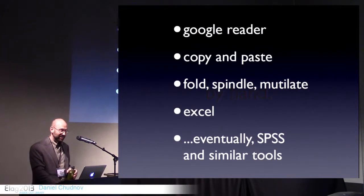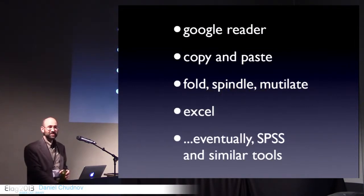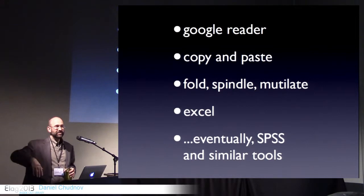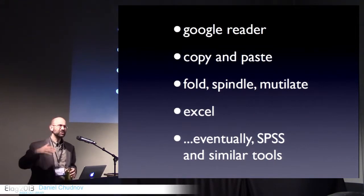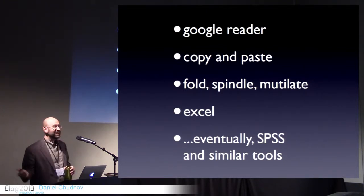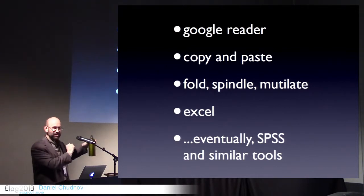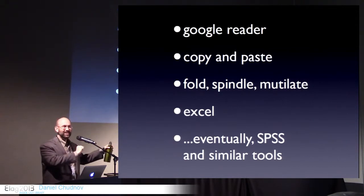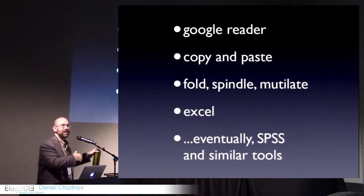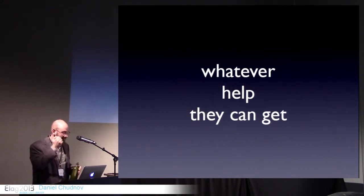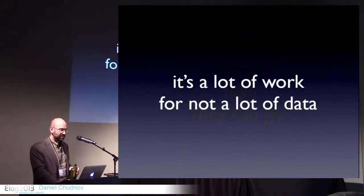The response she gave me was very clear: they do this by hand. She had subscribed to several dozen media outlets using Twitter's former feature of having Atom or RSS feeds, subscribed to them using Google Reader — which we know would only be around for just a few more days — and she was assigning the students in her class to copy and paste tweet by tweet out of Google Reader, fold, spindle, and mutilate the data to get it into Excel. Student labor, whatever help they can get, was going to get them forward.